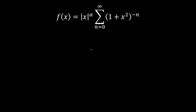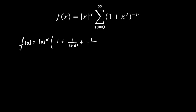I am going to define the function. f(x) will be given as |x|^α multiplied by a series. Let's open this series — starting from n equal to 0 to infinity. If I put n equal to 0, I get the first term; n equal to 1 gives the next term. If I put n equal to 2, I get 1 plus x² whole squared, and it goes till infinity.